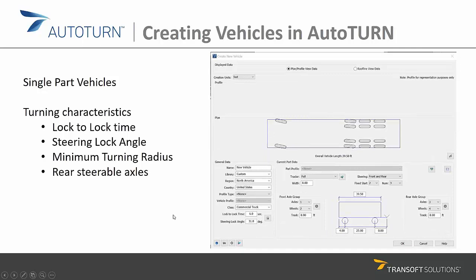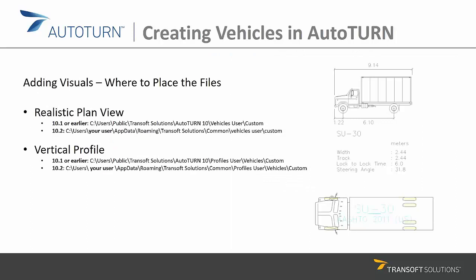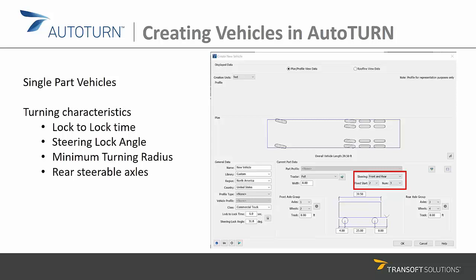Another possibility to make the steering behavior of your vehicle as realistic as possible is to set up rear steerable axles. For those vehicles, you have extra tools in AutoTurn. The first step is to change the steering type to front and rear steering, and then identify which axles will remain fixed. The fixed start value and number value can be changed to influence the rear steering behavior by fixing the correct axles.